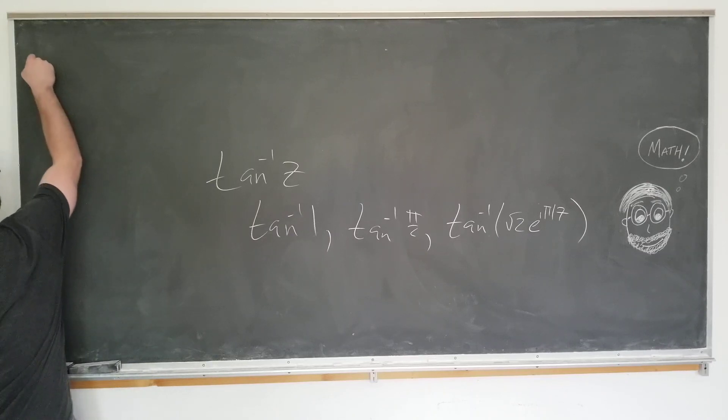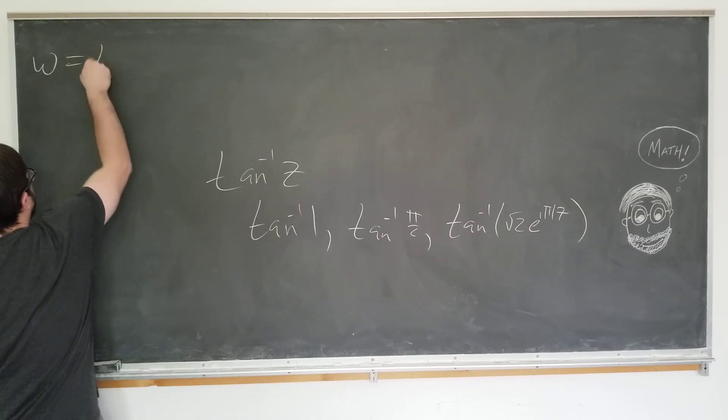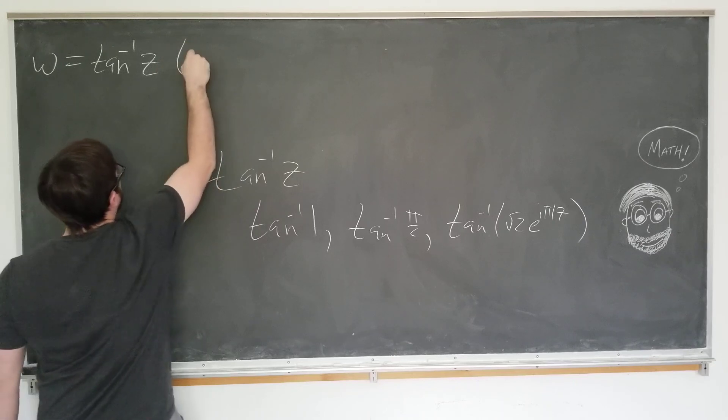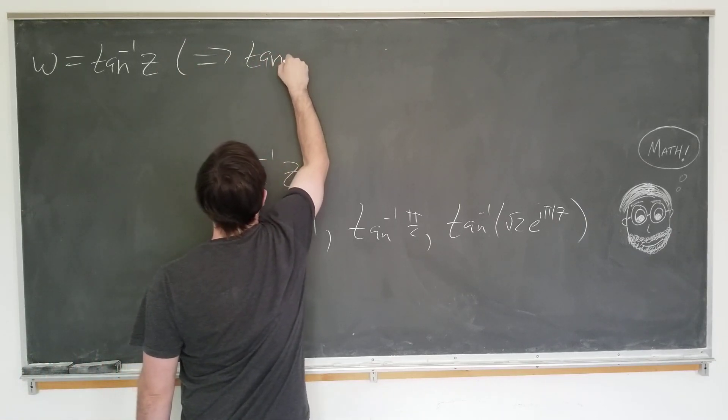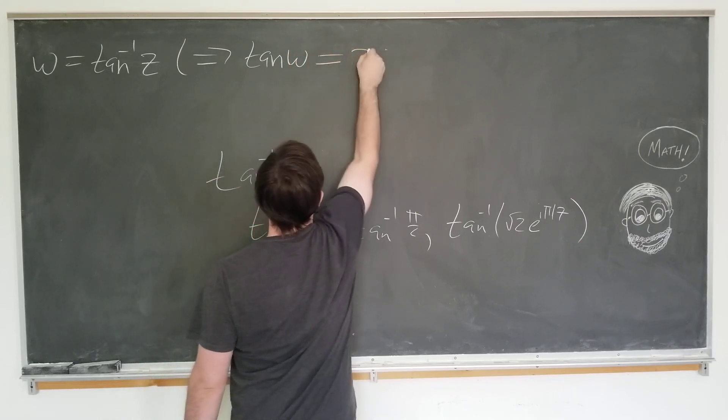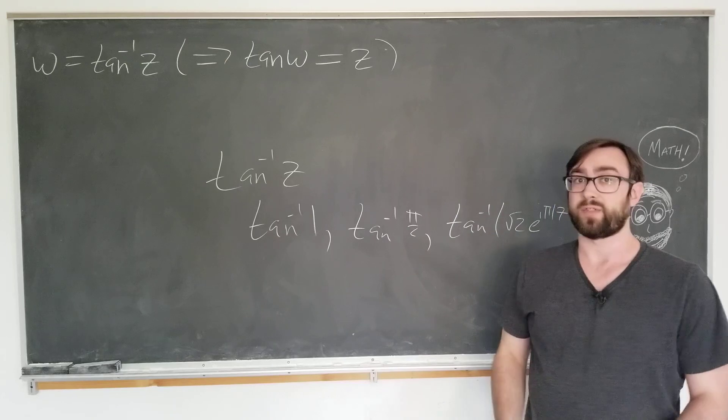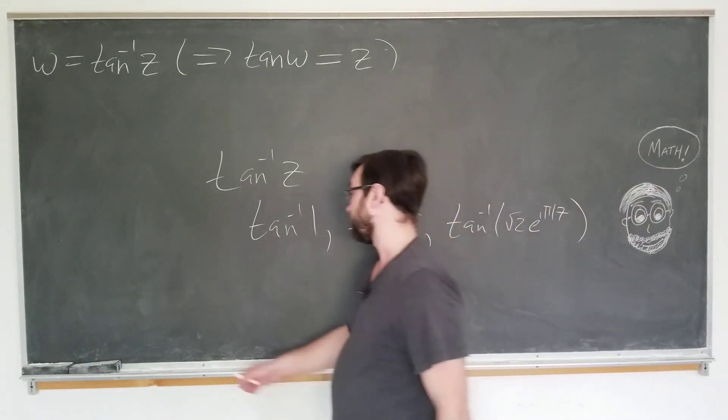We're going to begin by letting our complex function w or omega to be the arctangent of z, which of course tells us that tan of omega or w equals z. From here, we want to use the complex version of the sine and cosines and see where it gets us.